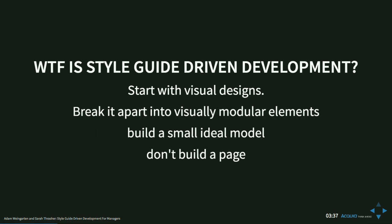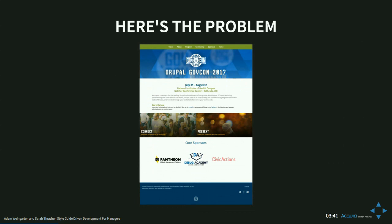In the old model, you'd hand a front-end developer a page and say go build this. They'd create their own universe for that page, and then you'd give them another page and they'd build an entirely new universe. These pages would be extremely brittle. With multiple developers, possibly from different contractors, you'd get subtle inconsistencies between implementations that you might not catch in UAT. And when your client decides to change the font across the site, that's really painful.